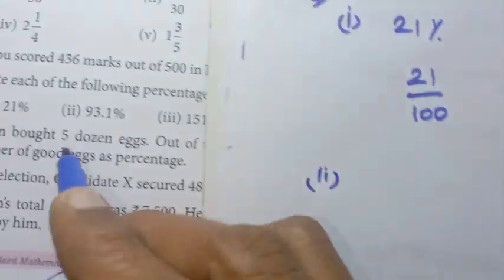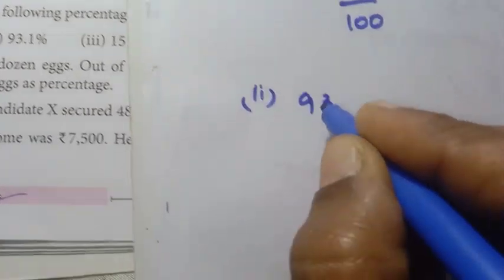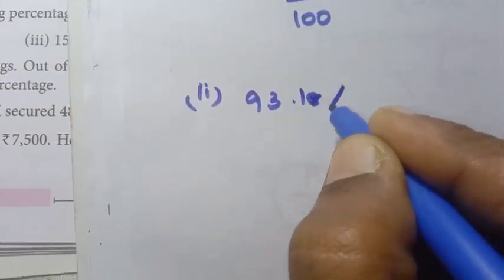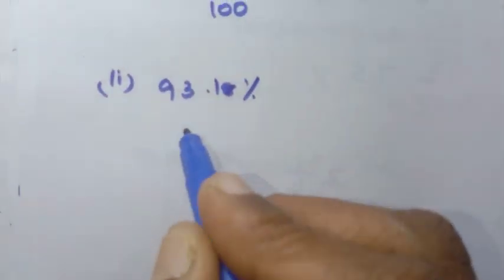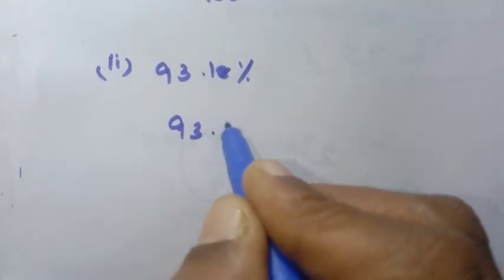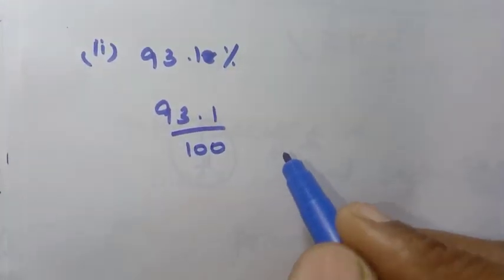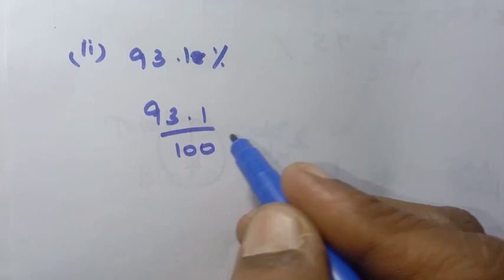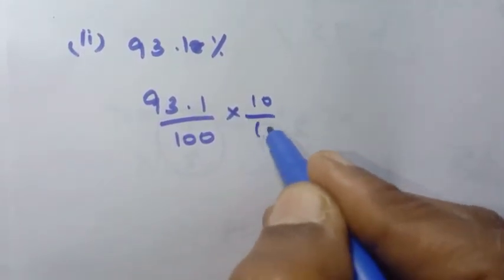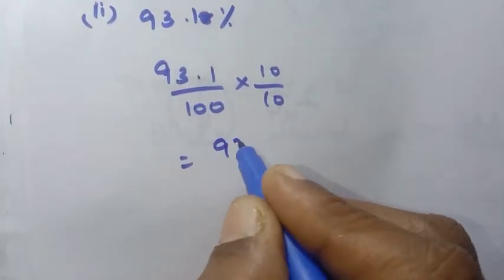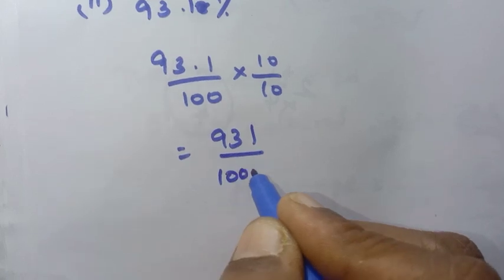Second, 93.1 percentage. 93.1 percentage is written as 93.1 by 100. What do we do now? Into the point, multiply by 10 by 10. So, 931 by 1000.